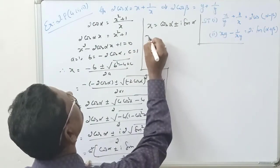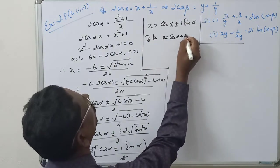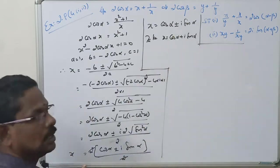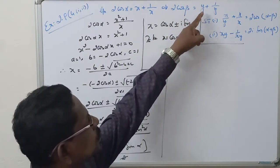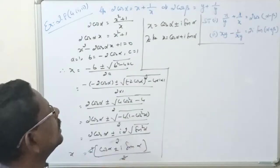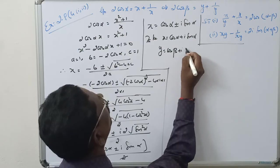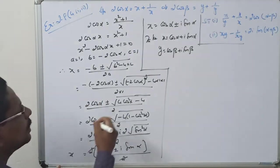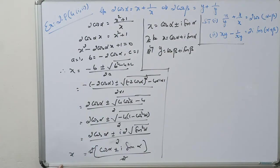So we take x equal to cos α plus i sin α, or x equal to cos α minus i sin α. Taking x equal to cos α plus i sin α. Similarly, for 2cos β equal to y plus 1/y, by the same manner you will get y equal to cos β plus i sin β.